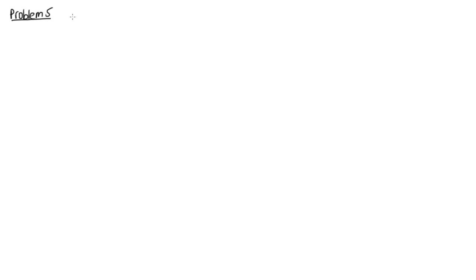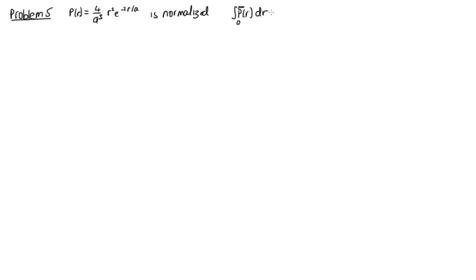Problem five — note you wouldn't get this in an exam as it's mathematically quite challenging. We're asked to show that P(r) = (4/a³) r² e^(−2r/a) is normalized. Something is normalized if when we integrate it over all values it equals 1, i.e., the integral of P(r) dr from 0 to ∞ equals 1.